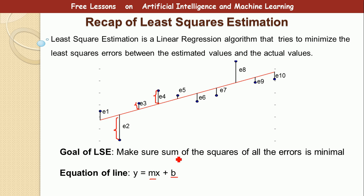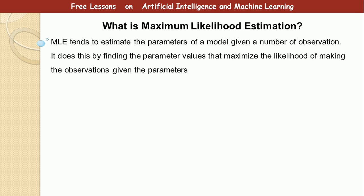Let's now go to maximum likelihood estimation. Now maximum likelihood estimation tends to estimate parameters of a model when you have a number of observations. So what it does is it finds parameter values that maximize the likelihood of making the observations given the parameters. What does this mean?